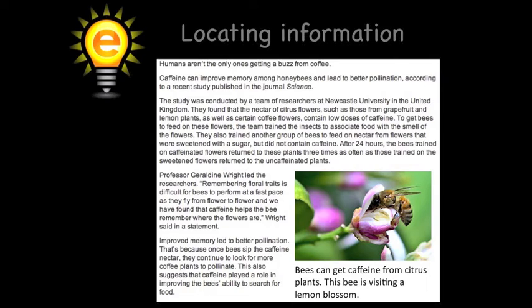Now let's take a look at the second photo caption to see if it gives us any more insight about the article. It says: Bees can get caffeine from citrus plants. This bee is visiting a lemon blossom. I know a little more about how bees obtain caffeine, and I haven't even read the article. Do you see how easy and quick it was to locate that information using text features? This is definitely an important reading strategy and one that you'll use all the time anytime you research a new topic online.